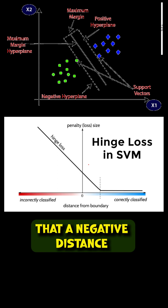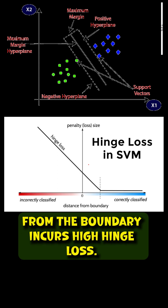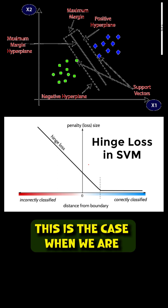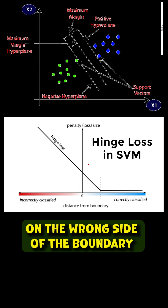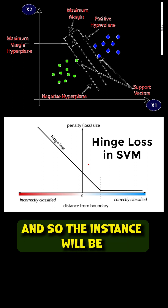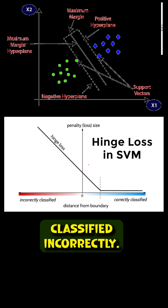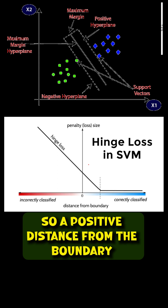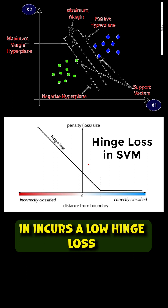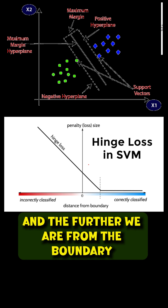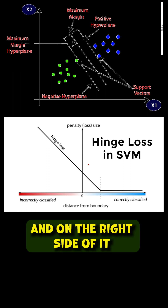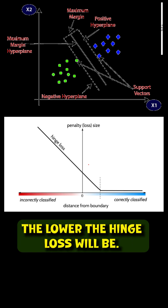Looking at this image, we can see that a negative distance from the boundary incurs a high hinge loss. This is the case when we are on the wrong side of the boundary, and so the instance will be classified incorrectly. A positive distance from the boundary incurs a low hinge loss or no hinge loss at all, and the farther we are from the boundary and on the right side of it, the lower the hinge loss will be.